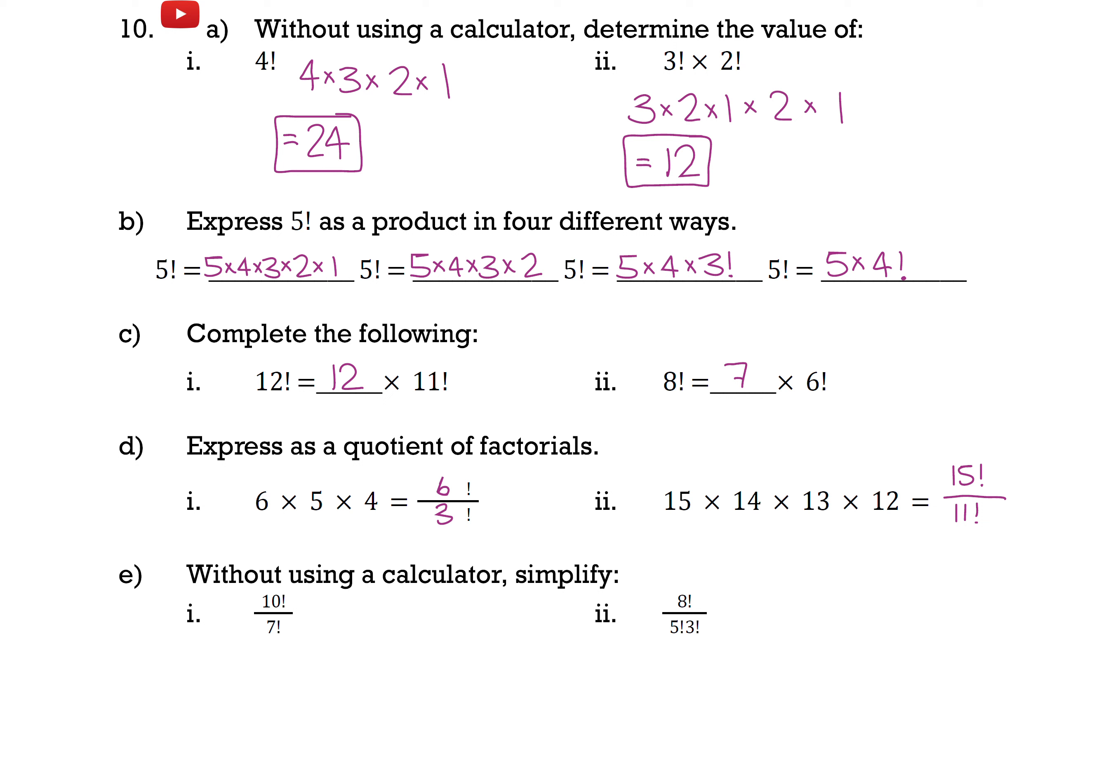And now for part e, without using a calculator, simplify. First of all, 10 factorial divided by 7 factorial. So what I'll do here to start is just write this out. So I have 10 times 9 times 8 times 7. And I could keep going on that, but I'm going to leave the 7 as a 7 factorial.